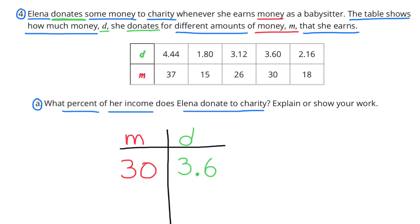Number 4. Elena donates some money to charity whenever she earns money as a babysitter. The table shows how much money D she donates for different amounts of money M that she earns. Part A: What percent of her income does Elena donate to charity? Explain or show your work. In this chart, she shows different amounts of donations for different amounts of money earned.